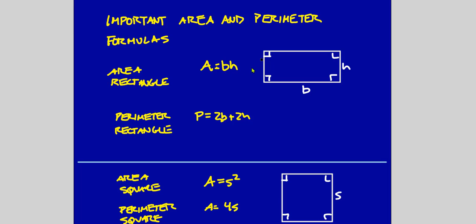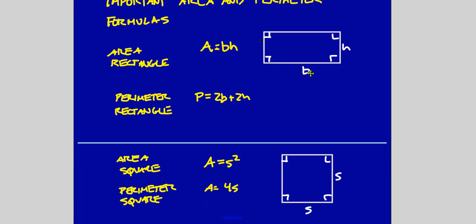For a rectangle: area is base times height. A rectangle is a quadrilateral with four right angles; opposite sides are congruent or equal in length. The perimeter is 2b plus 2h — you have two bases plus two heights. A square is a special case of a rectangle, so the area is side times side, s squared, and the perimeter is 4s because all sides are congruent, each with length s.